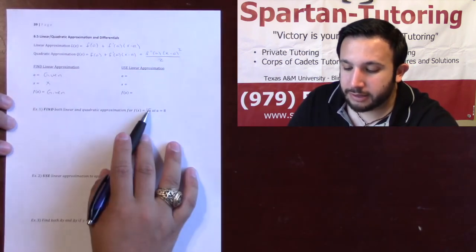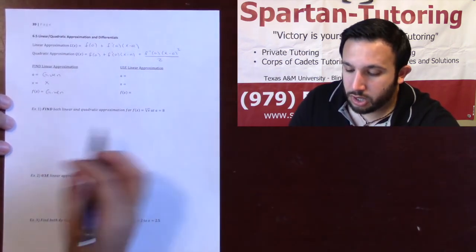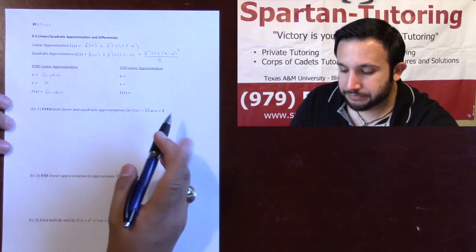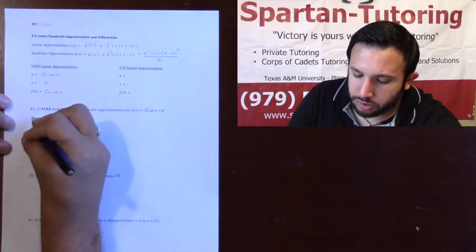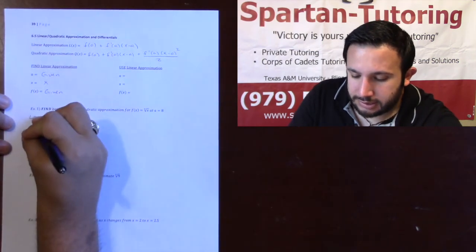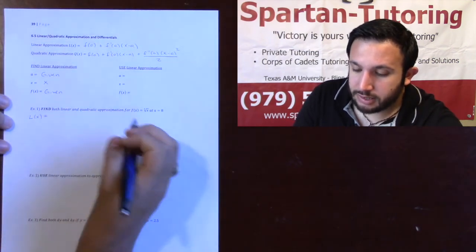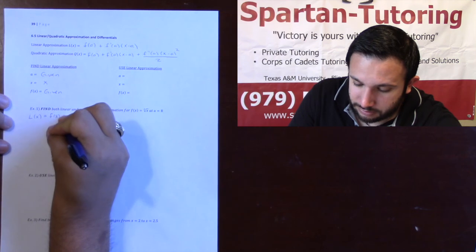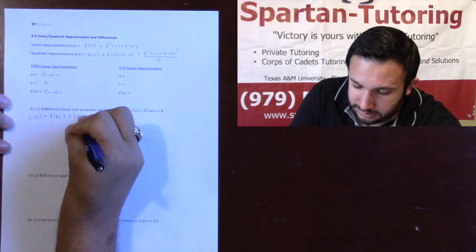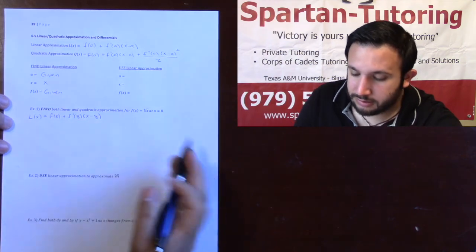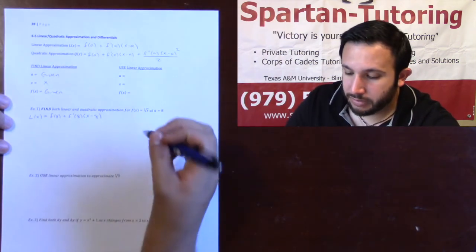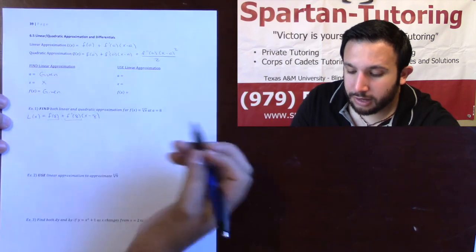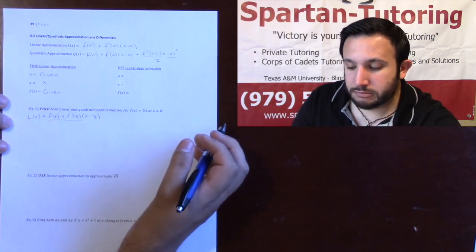Let's talk about how to find both linear and quadratic approximation. This question says: find both linear and quadratic approximation for the cubed root of x at a equals 8. What I like to do is write down the general formula first. So L(x) equals f(8) plus f'(8) times (x minus 8). Notice there are only two things you need to find: f(8) and f'(8). Once you have those two numbers, you just plug them in.